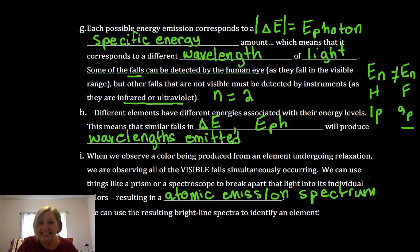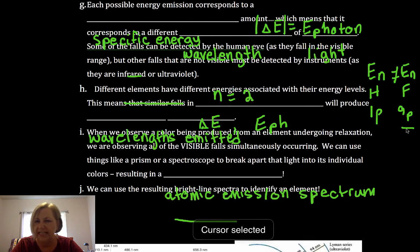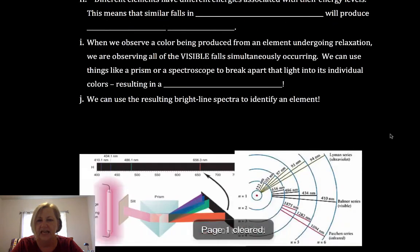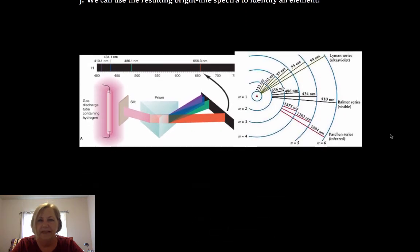We can identify using what's called a bright line spectrum. And that's what we're looking at. We're looking at the emission of light in a bright line spectrum.